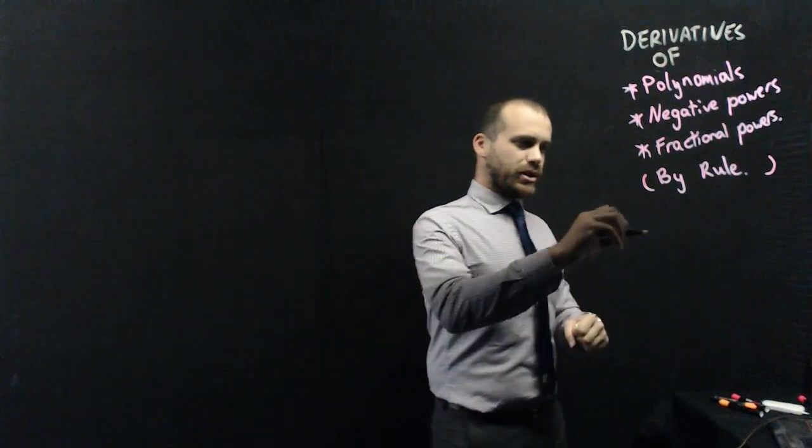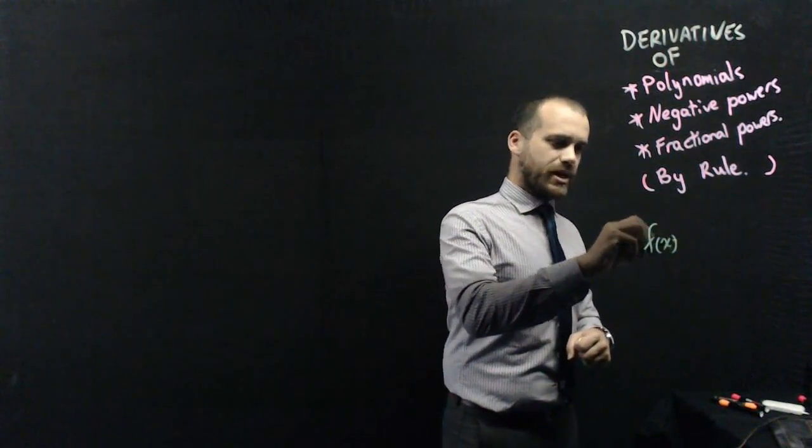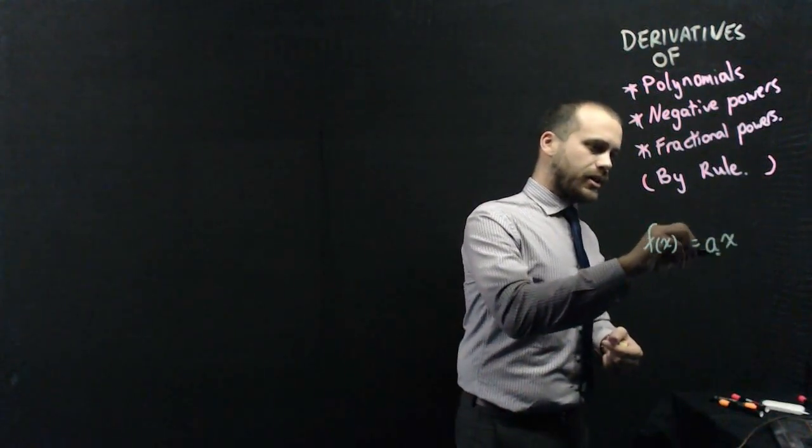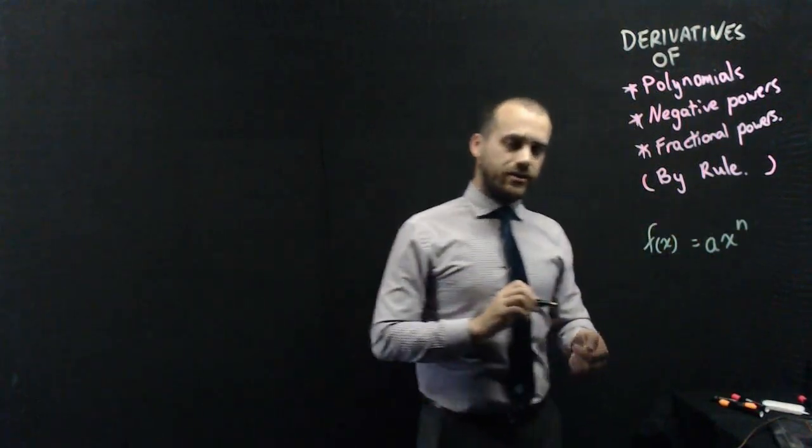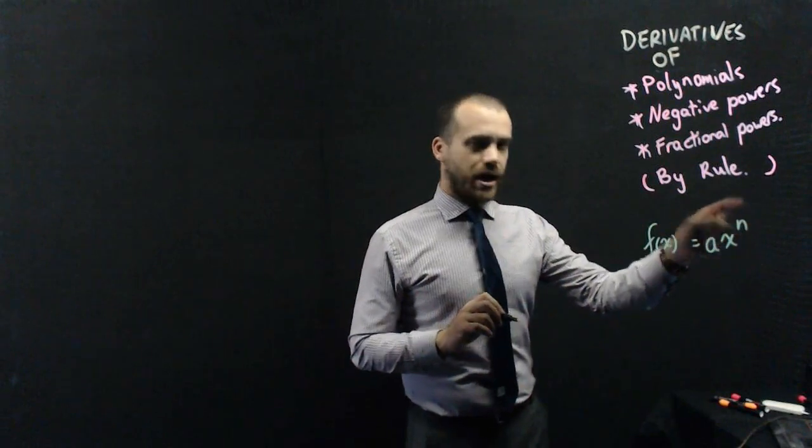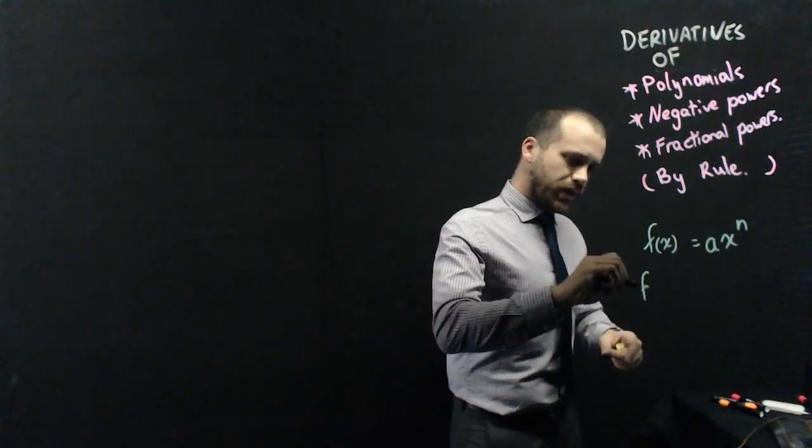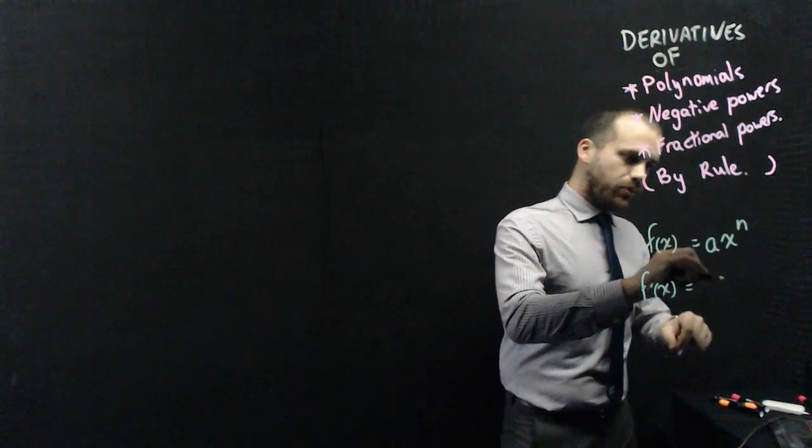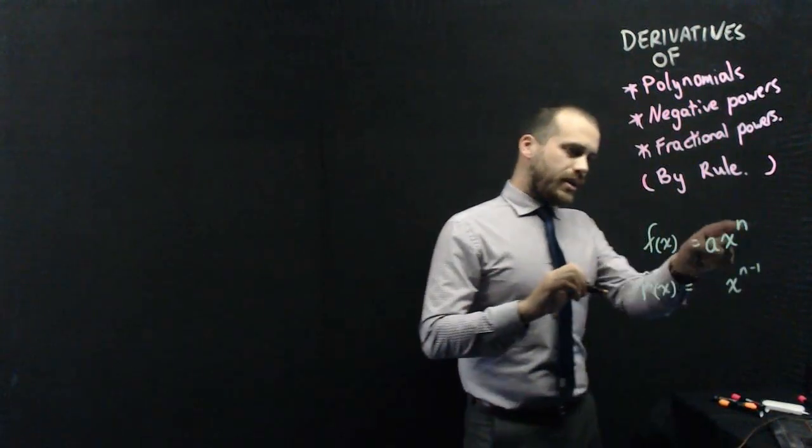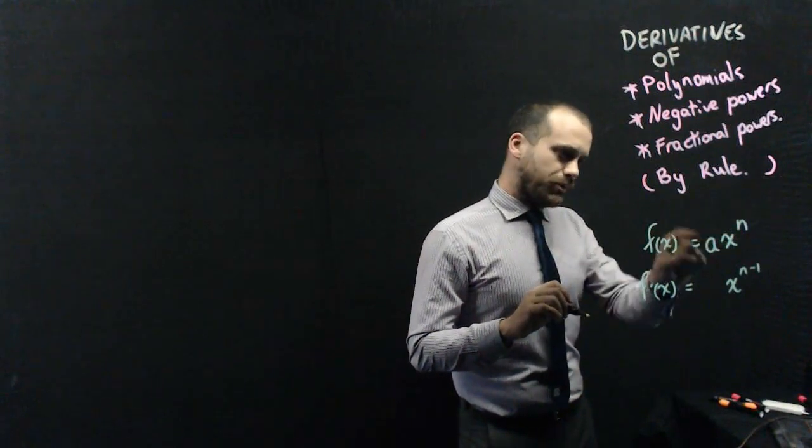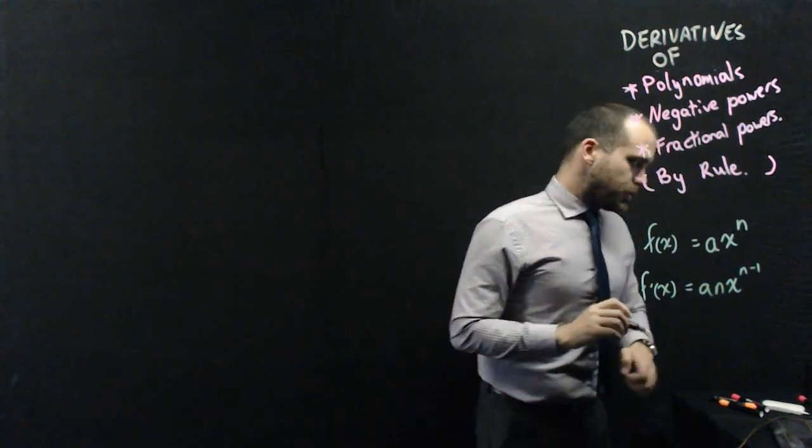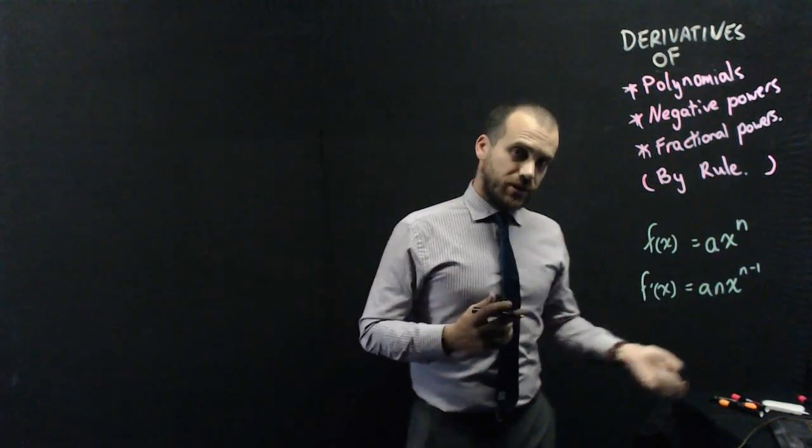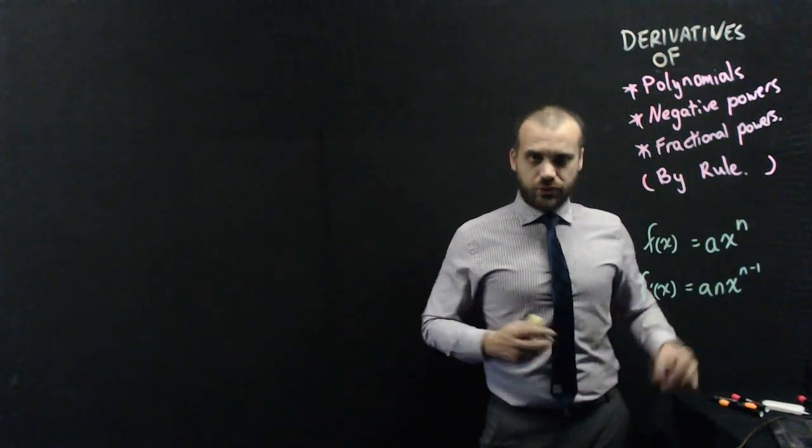But the main idea is just this. If you have a function, say f of x, and that function can be written as a times x to the n, just a number and then x to the power of another number. The derivative of that, so f dash x, will be equal to, now we decrease the power by 1, and then whatever the original power was, we multiply that by a. So there's our rule. The derivative of ax to the n is equal to anx to the n minus 1. And you've seen questions like this before, I'm going to put up some examples and we'll chew through them real quick.